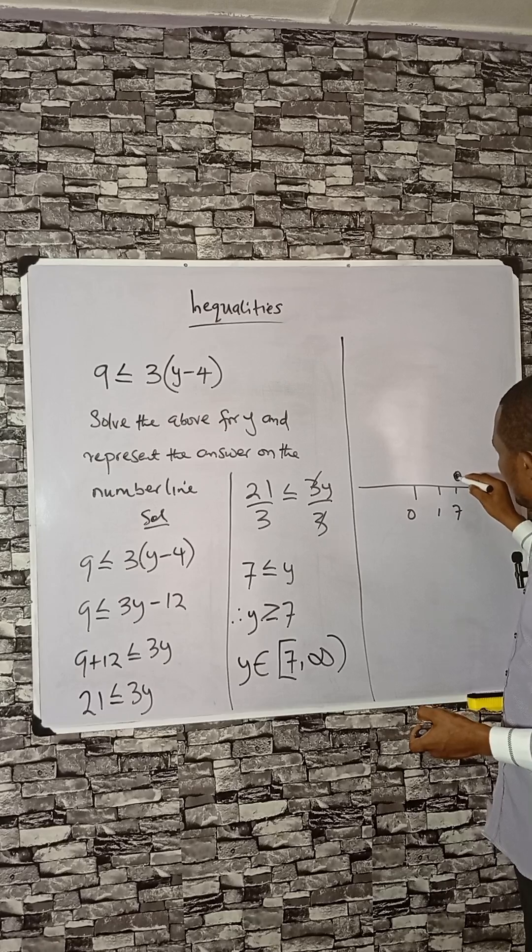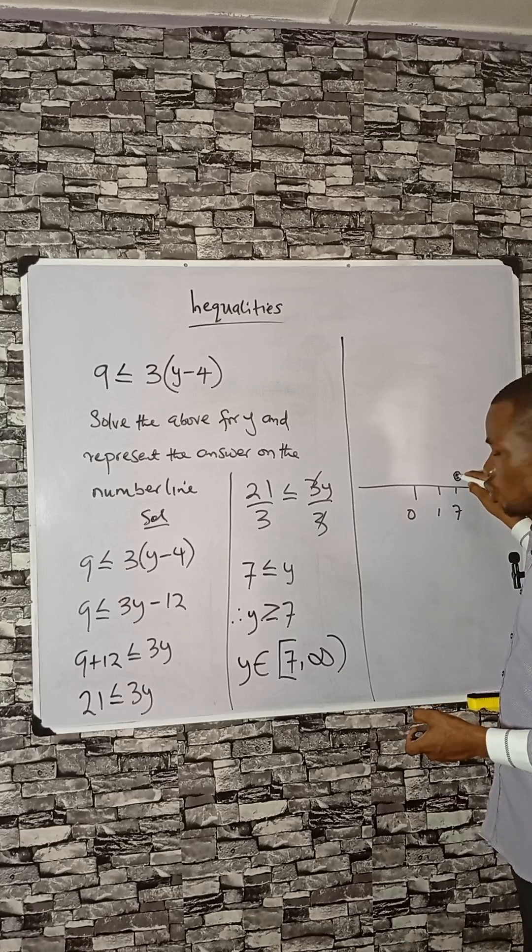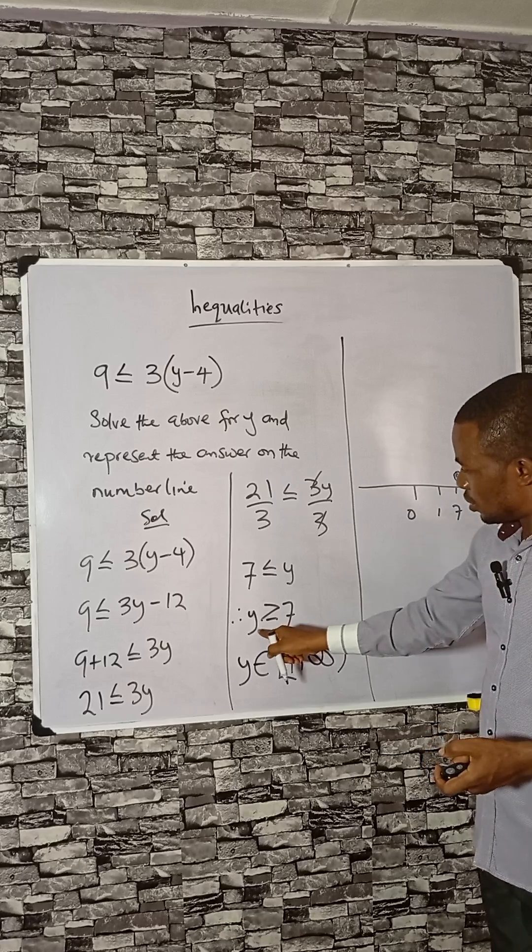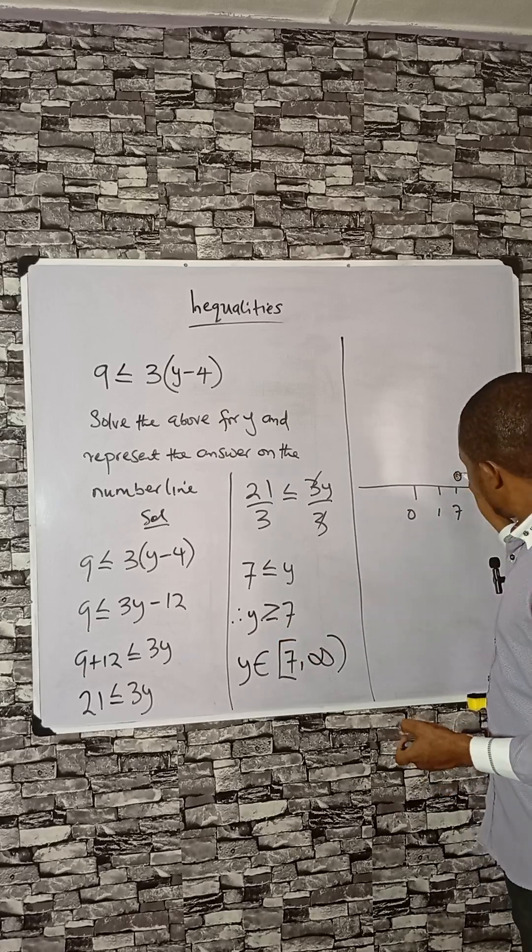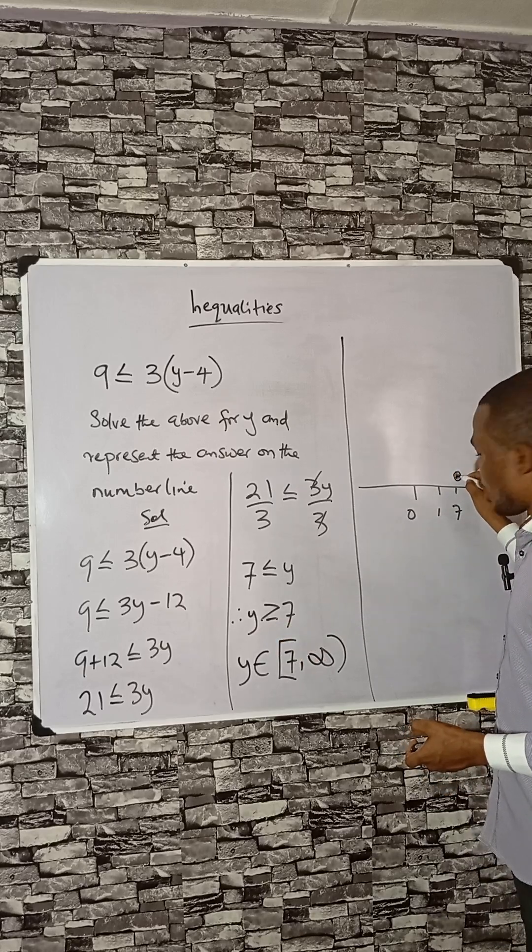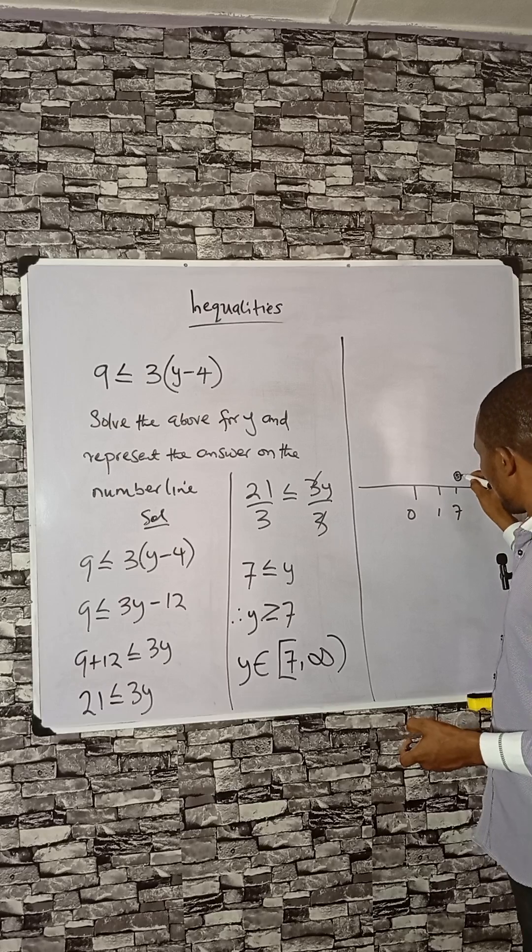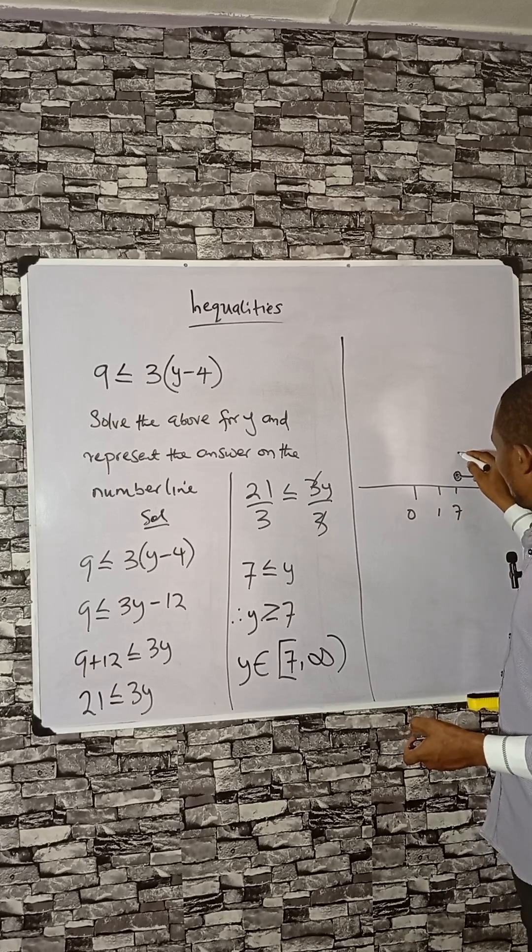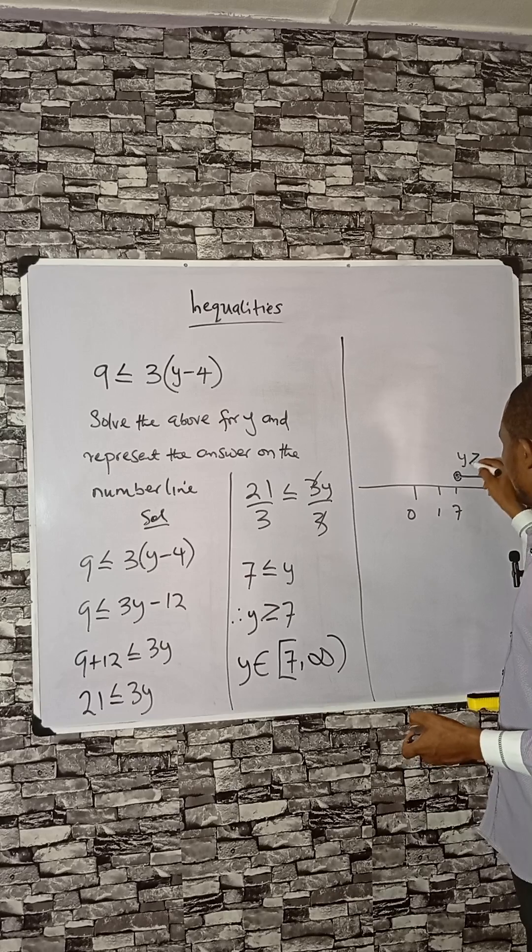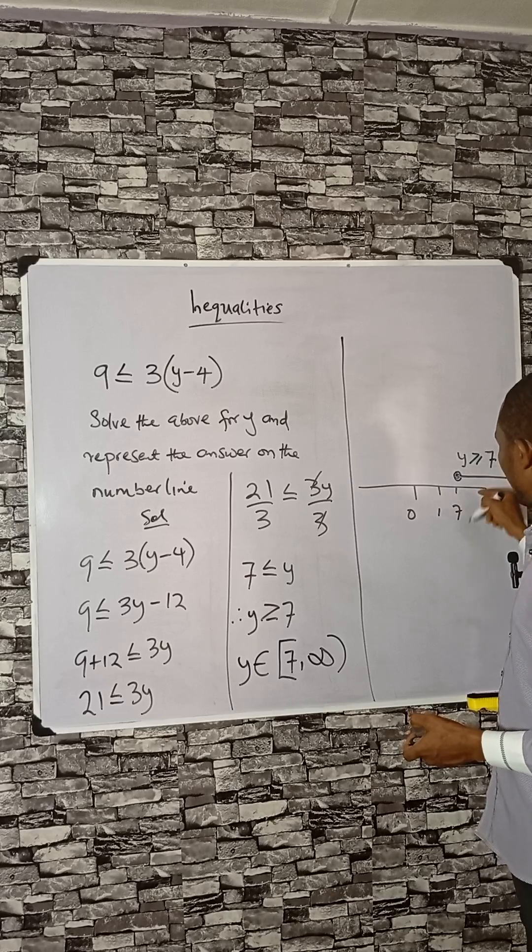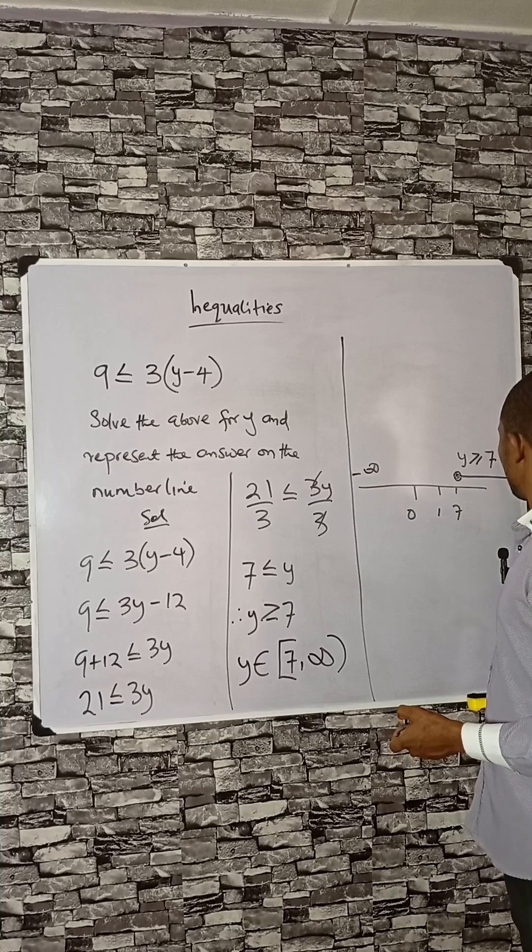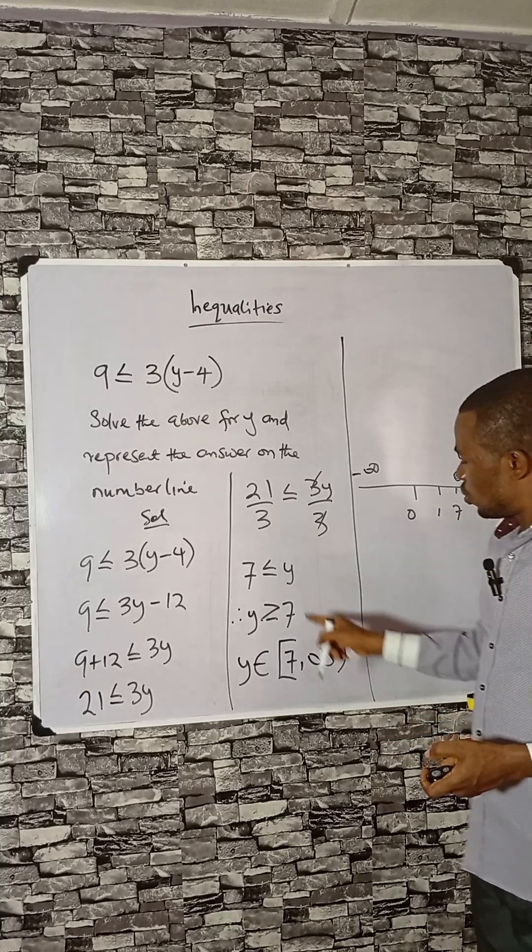We have to mark it here with a solid dot. This shows that y equals 7 is the first condition. Then y equals 7 is here, and y greater than 7 is this direction. It means that y is greater than or equal to 7. From here, this is negative infinity; this is positive infinity.